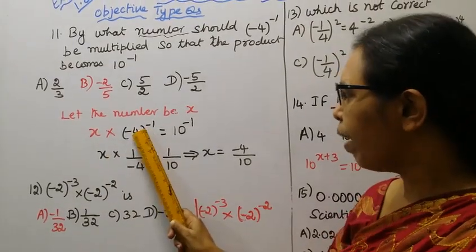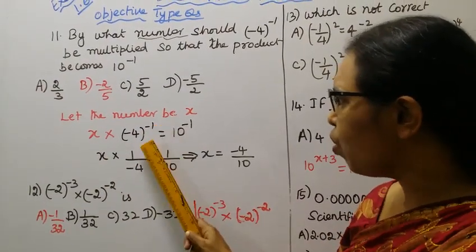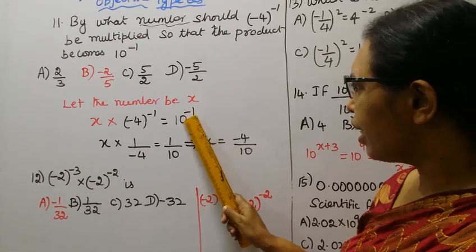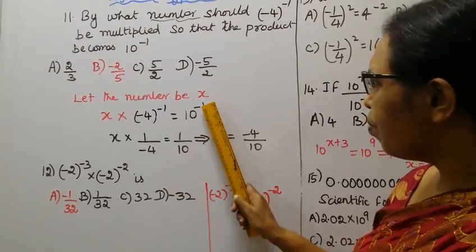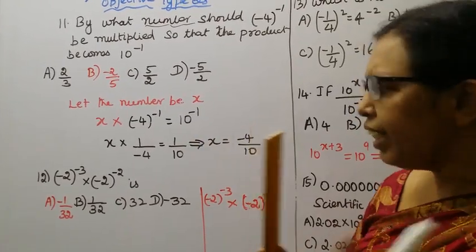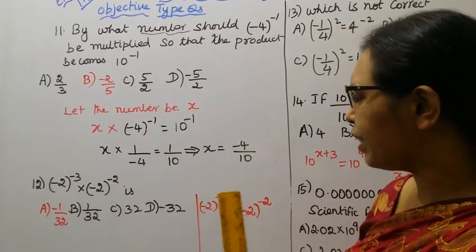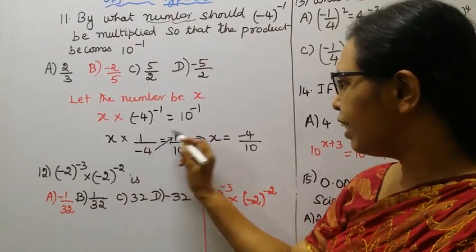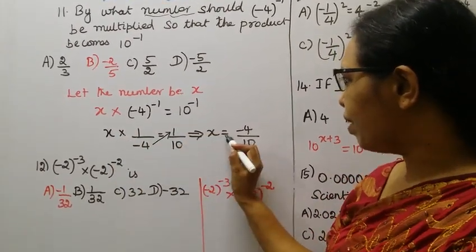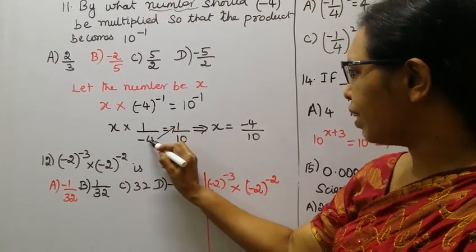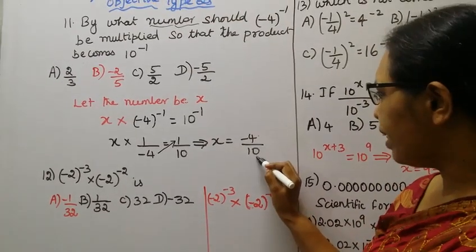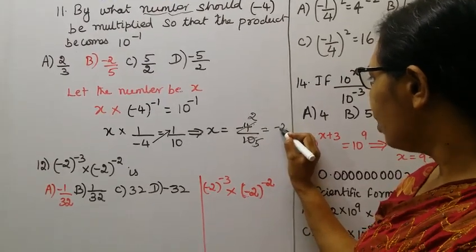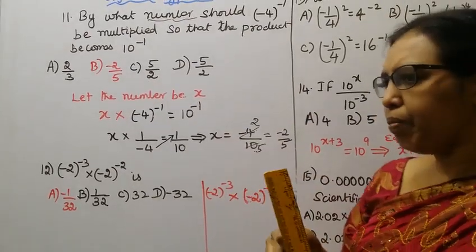We know that x into (-4) the whole power minus 1 equals 10 power minus 1. So x into 1 by minus 4 equals 1 by 10. Therefore x equals minus 4 by 10. Cancel: 2's are 4, 2 5's are 10, that is equal to minus 2 by 5. Option B: minus 2 by 5.